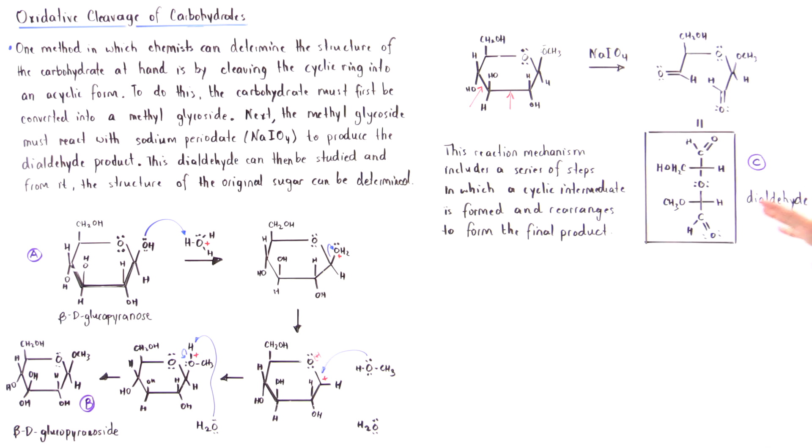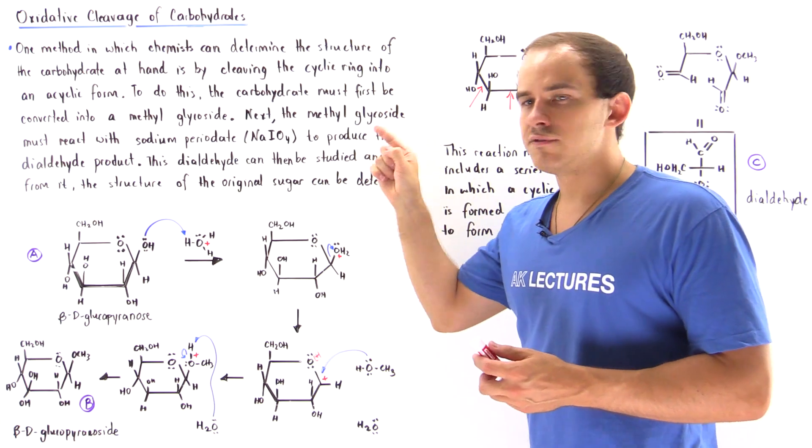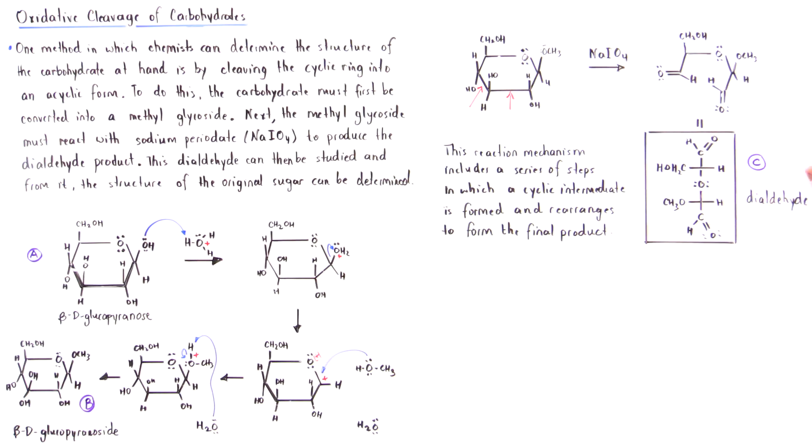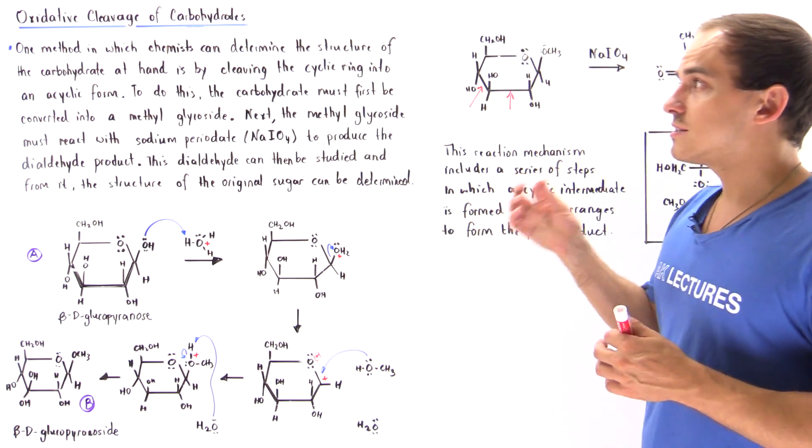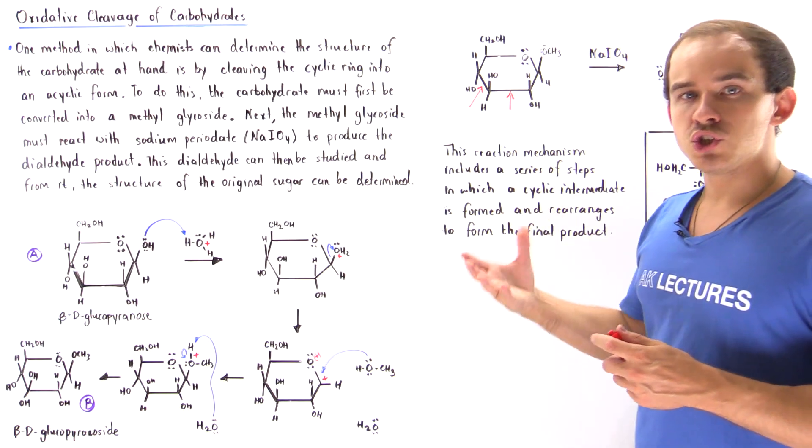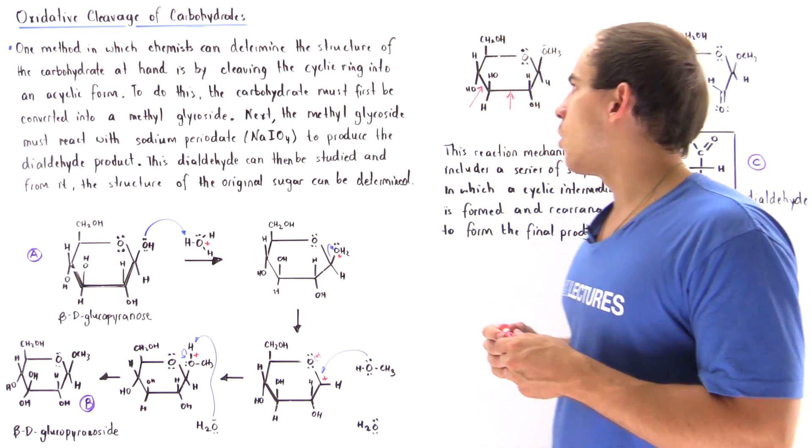Now, if you want to know what the mechanism of this reaction is, what the arrow formalism is, I'm going to leave a link above. But basically, this is the same exact reaction mechanism, the same exact arrow formalism as the case was when we discussed the oxidative cleavage of 1,2-diols.